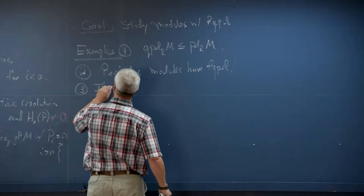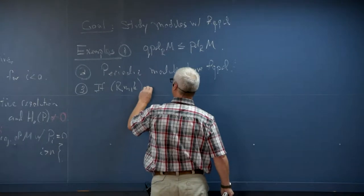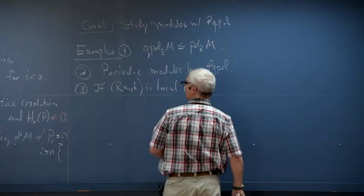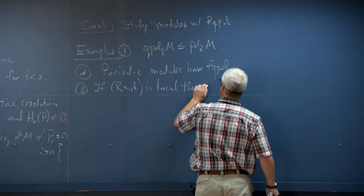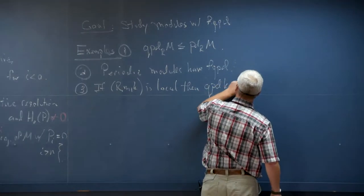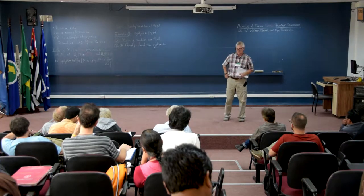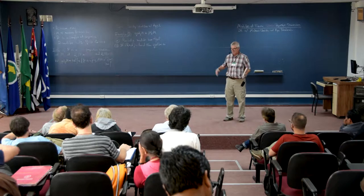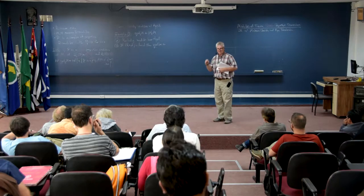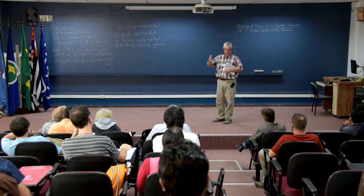Another example: if R is a Noetherian local ring (R, M, K), then the quasi-projective dimension of the residue field K is finite. You just take the Koszul complex on generators of the maximal ideal — you know that's killed by the maximal ideal, so each homology is just copies of K.